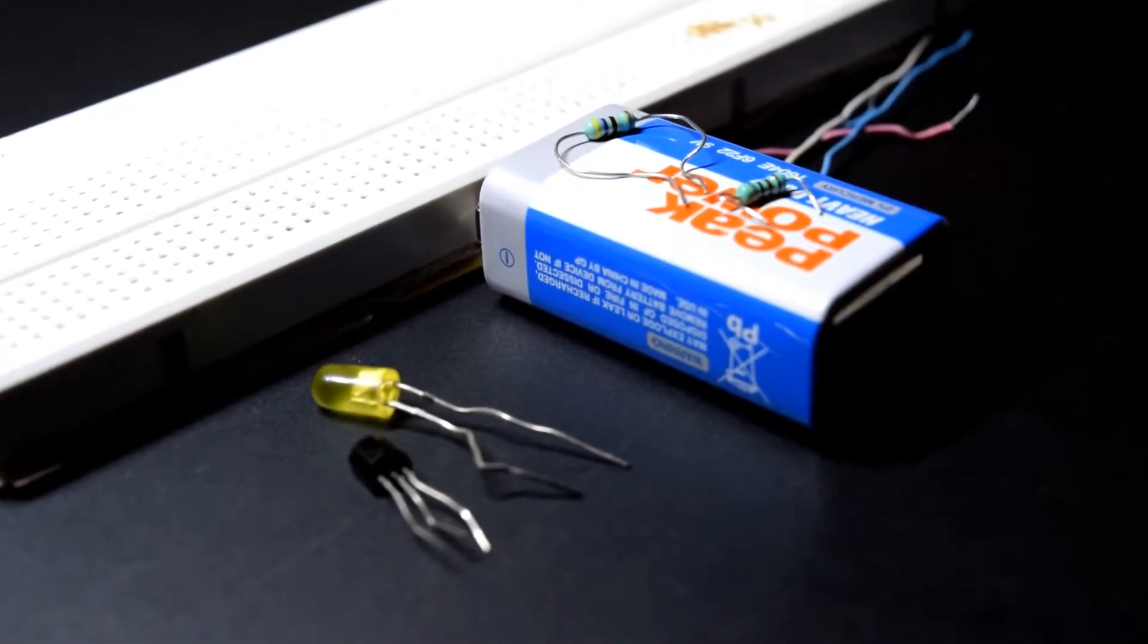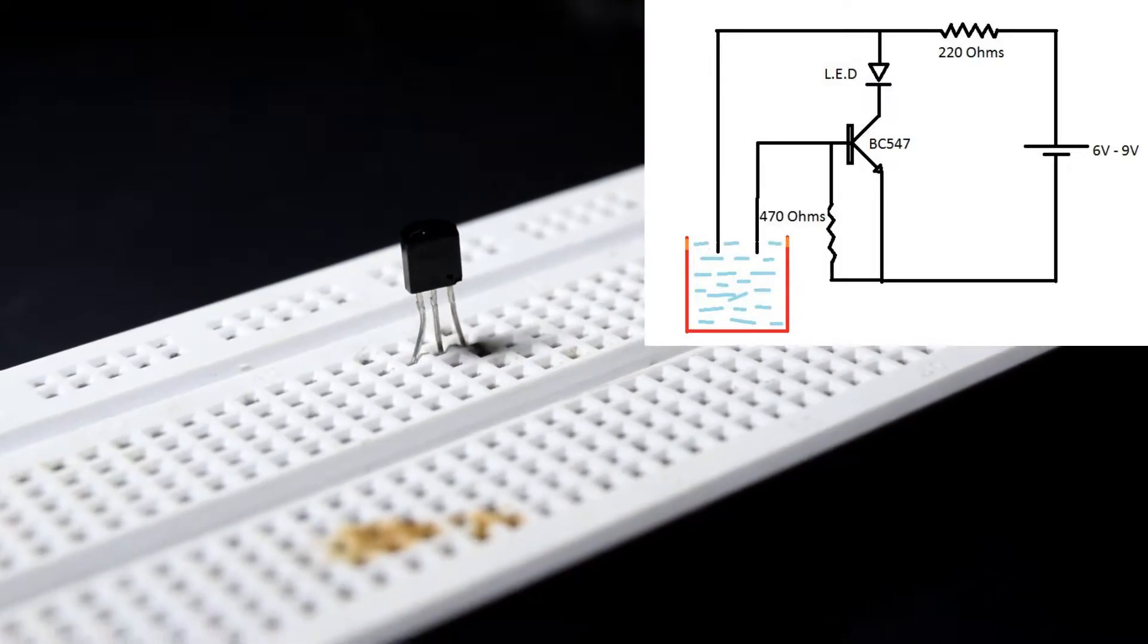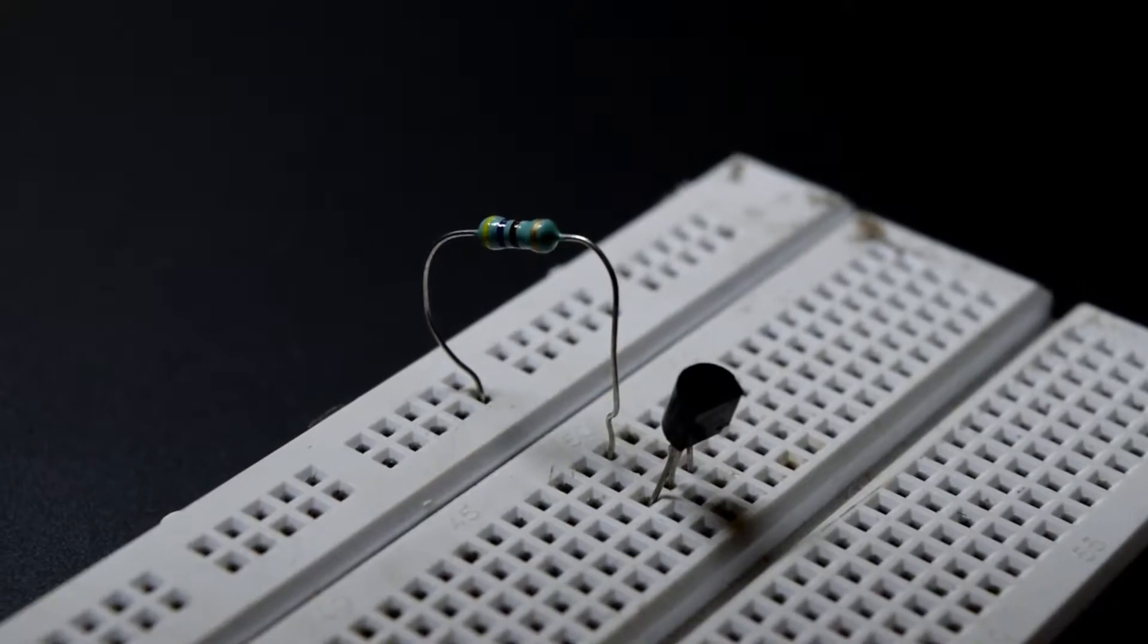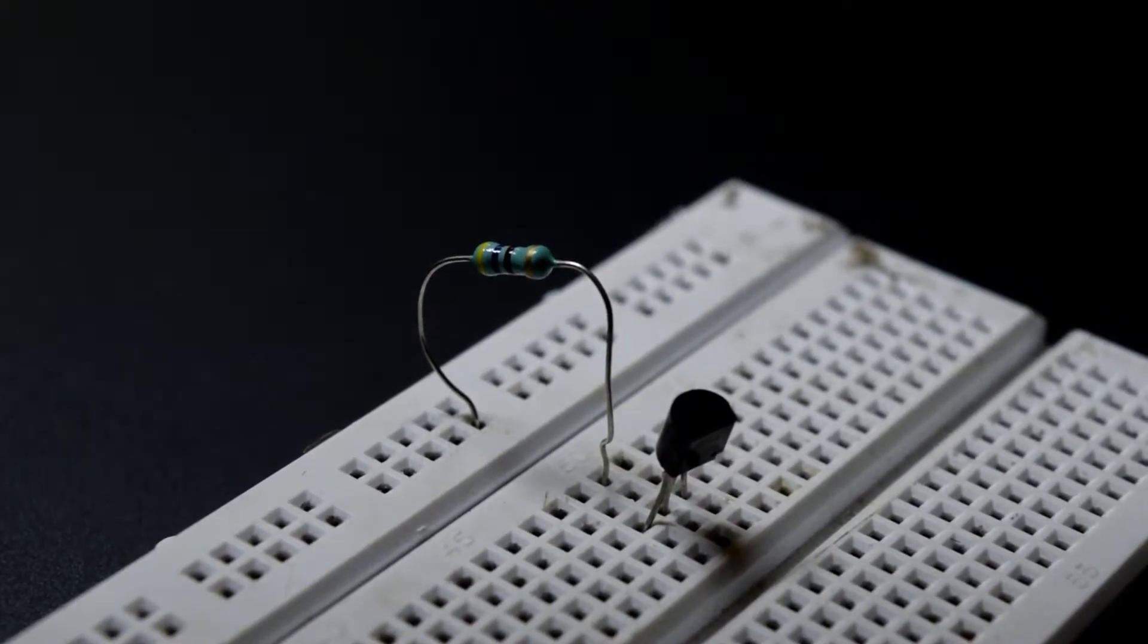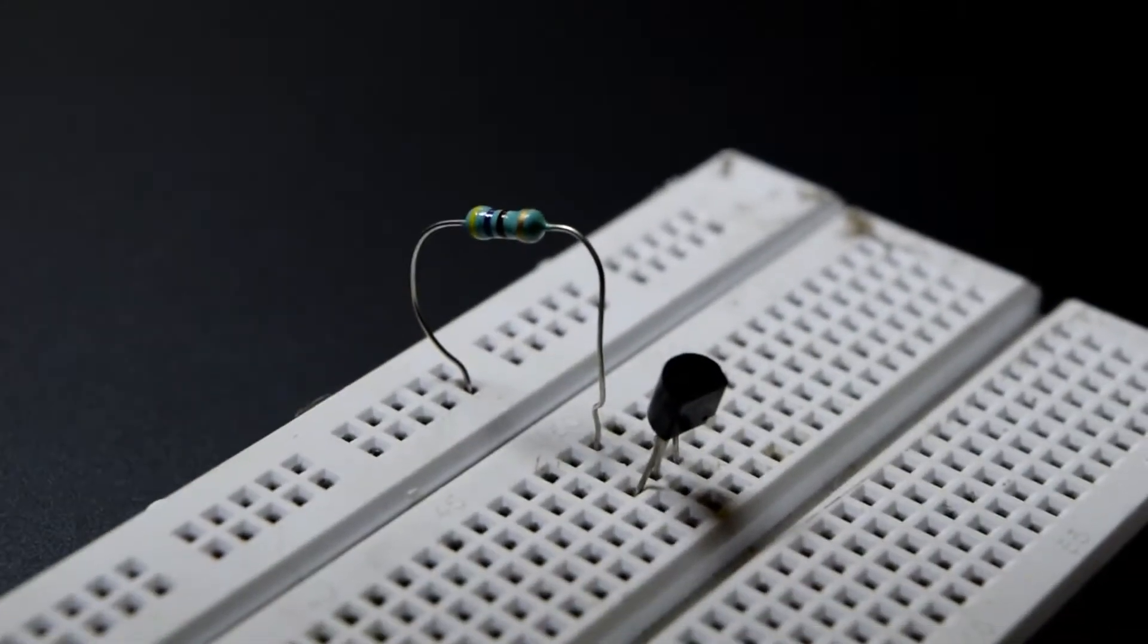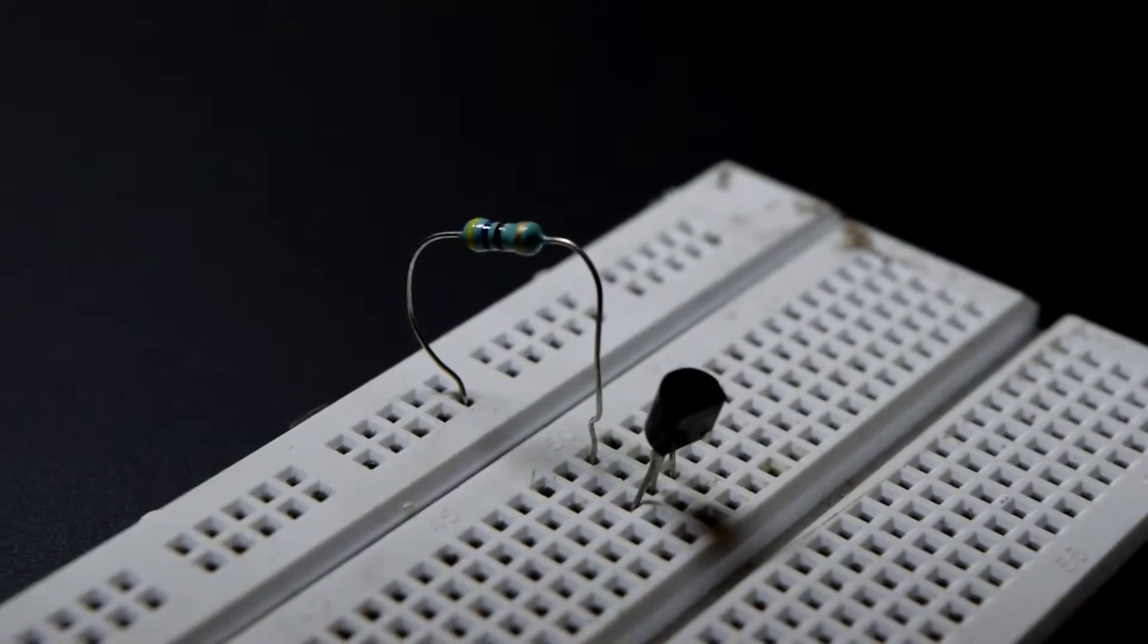The first step is to insert the BC547 transistor on the breadboard. Now connect the 470 ohm resistor between the negative power supply and base of the transistor. I have taken the lower rail for the negative or ground, and the upper rail as the positive power supply.